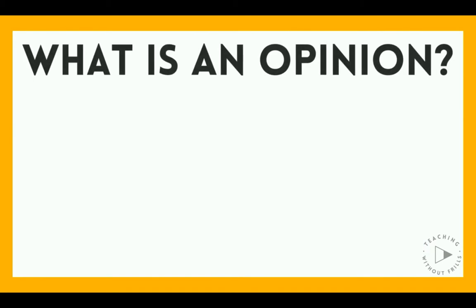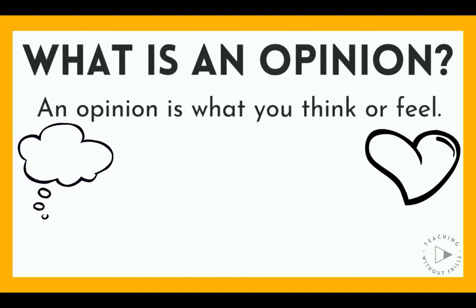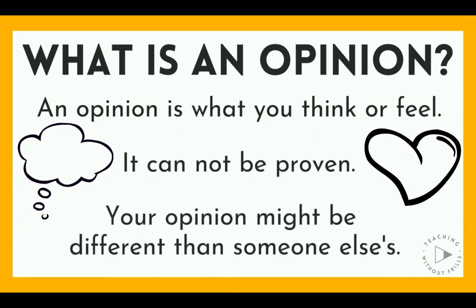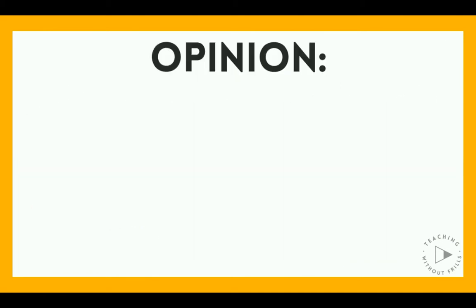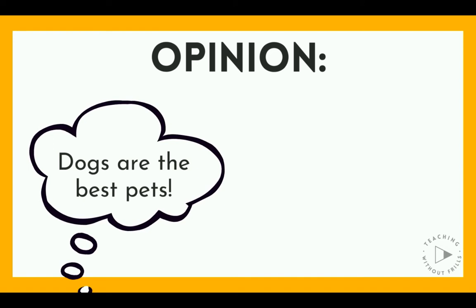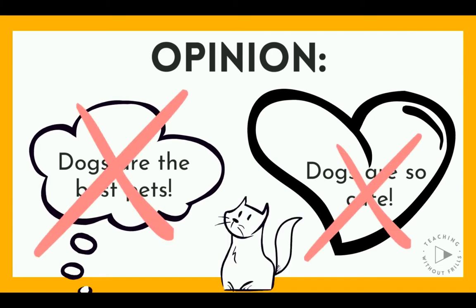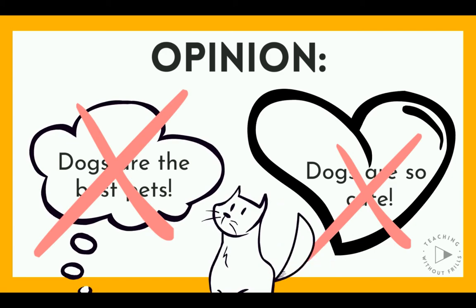So what's an opinion? An opinion is what you think or feel about something. It cannot be proven, and your opinion might be different than someone else's. Here's an example. You may think dogs are the best pets. You may feel like dogs are so cute, but someone else may think, no way, cats are the best, and they are way cuter.